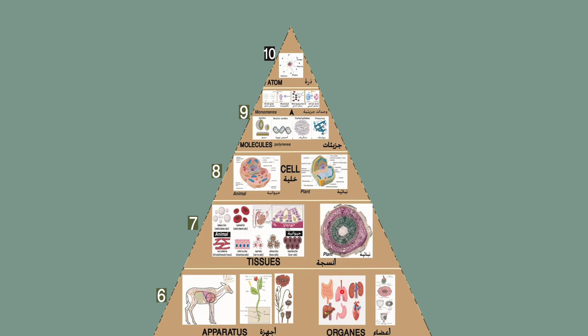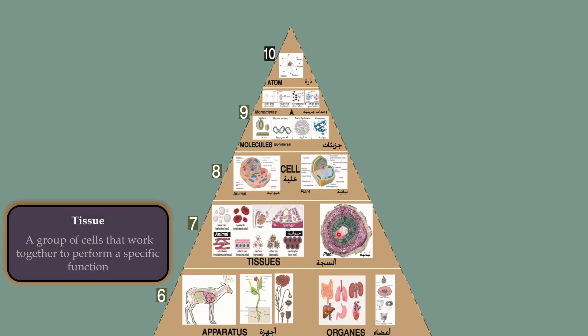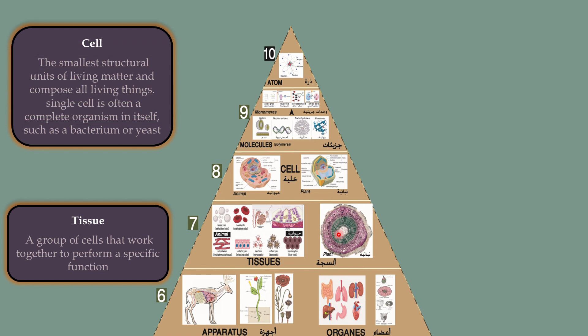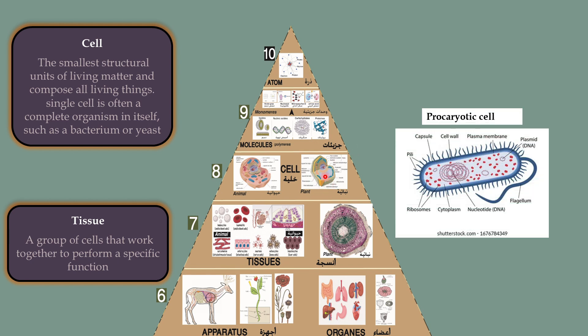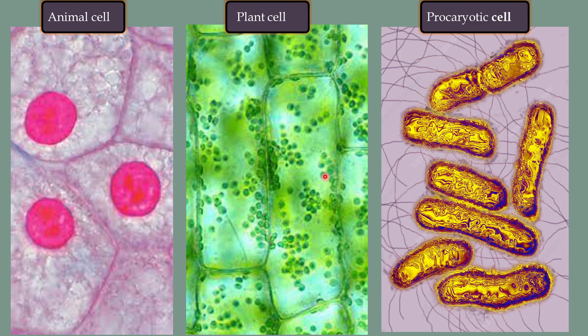Each system consists of a collection of organs in animals and in plants. Each organ, in turn, is composed of various tissues in animals and in plants. Tissue refers to a group of cells that work together to perform a specific function in the body. Cells, the basic building blocks of all living organisms, are classified into animal cells, plant cells, and prokaryotic cells, as seen under the microscope.